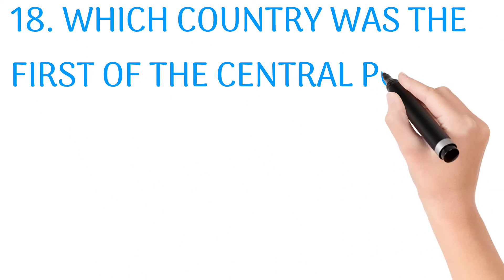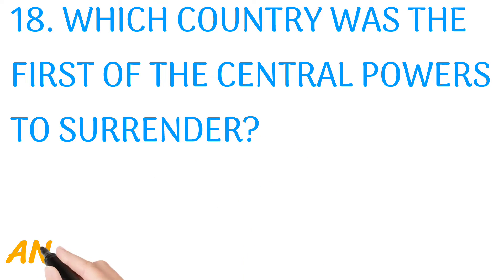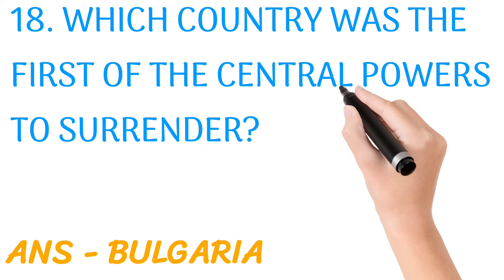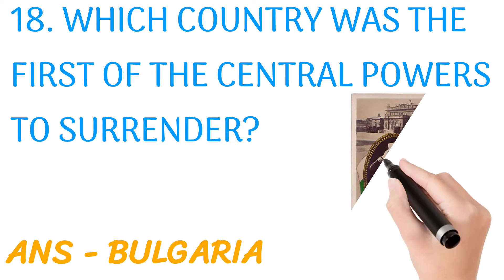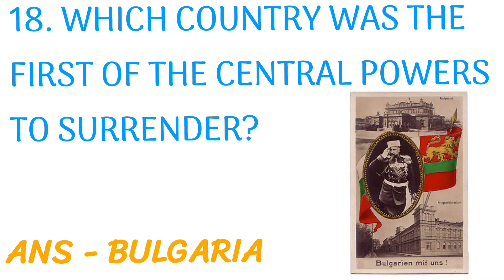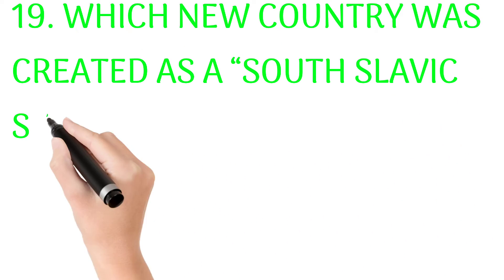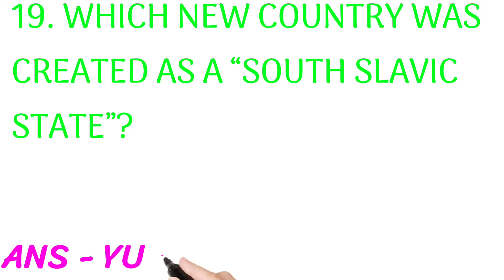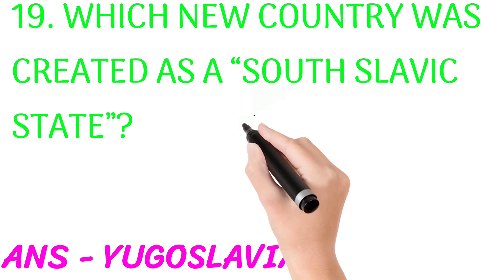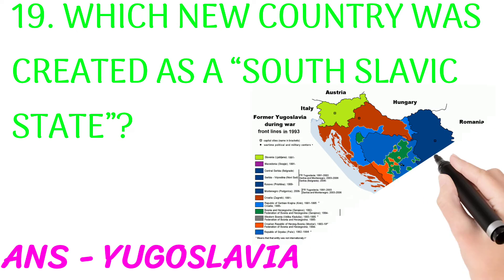Which country was the first of the Central Powers to surrender? Answer: Bulgaria. Which new country was created as a South Slavic state? Answer: Yugoslavia.